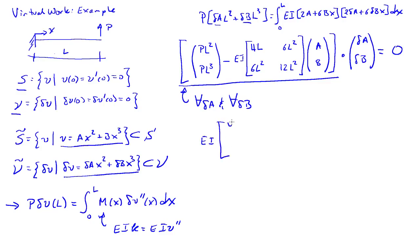EI, 4L, 6L squared, 6L squared, 12L cubed. That was an error up there.